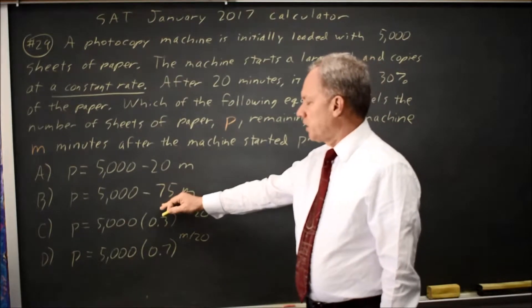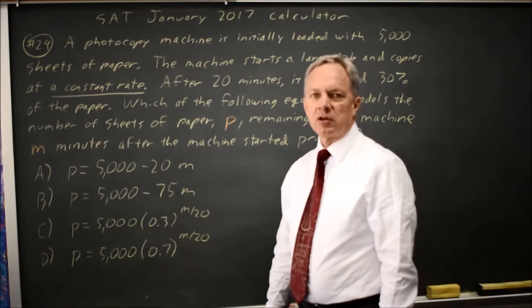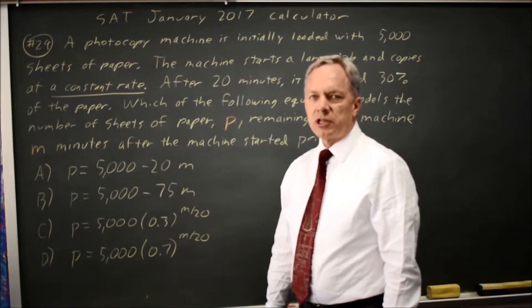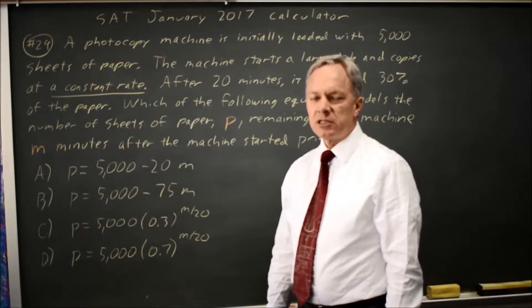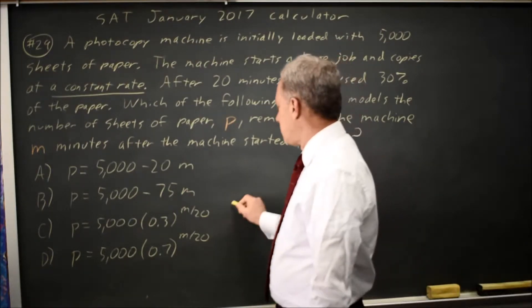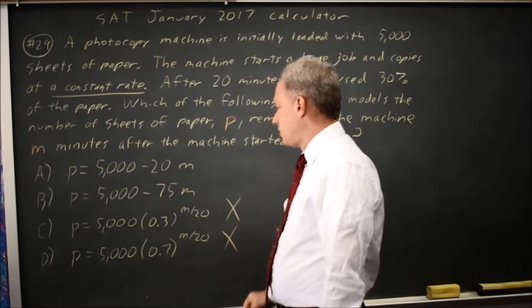Choices A and B are linear. Choices C and D are exponential. If you're copying at a constant rate, the model should be linear, not exponential, so C and D are wrong.